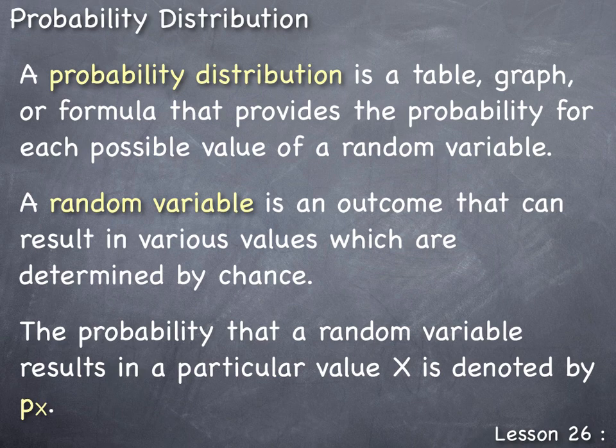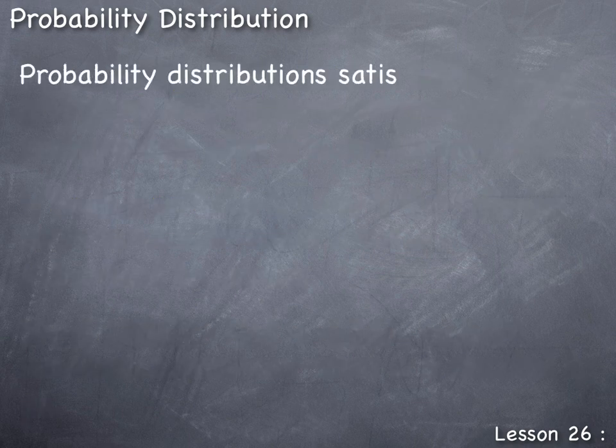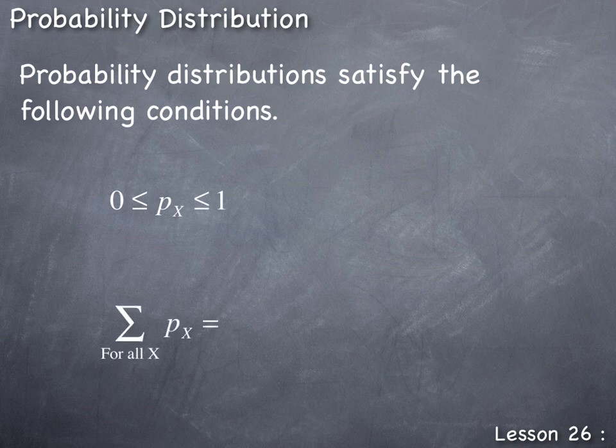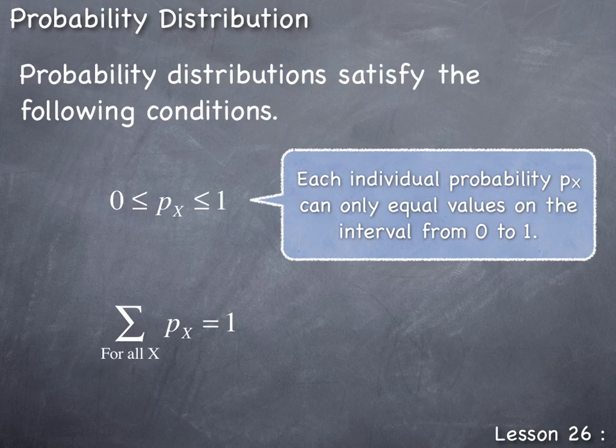Probability distributions satisfy the following conditions. The first condition states: 0 ≤ P(X) ≤ 1, meaning each individual probability P(X) can only equal values on the interval from 0 to 1. This is one of our basic rules of probability. Probability distributions produce the probabilities for every possible value of the random variable, so they follow all the basic rules of probability. The second condition states that the sum of the probabilities for all possible values of X equals 1.